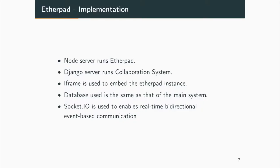How did we implement Etherpad? The Etherpad instance runs on the Node server, and in the Django server — which contains the main system — an instance of Etherpad is run using an iframe. Real-time communication happens through Socket.IO, and the database is shared between both the Node server and the Django server.